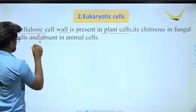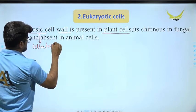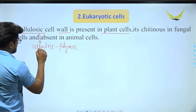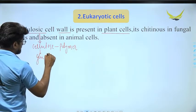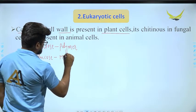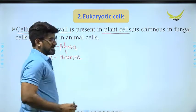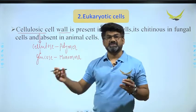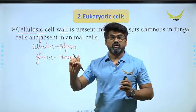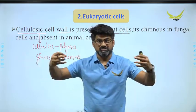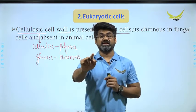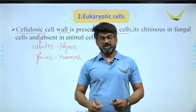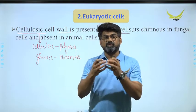Cellulose is a polymer, and its monomer unit is glucose. Many glucose molecules are joined together by glycosidic bonds — the bond found in carbohydrates — and this forms a polysaccharide called cellulose.